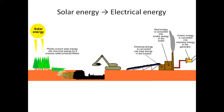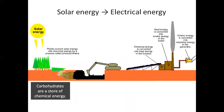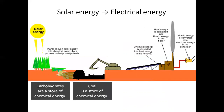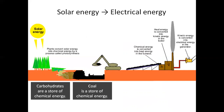How is solar energy converted into electrical energy? Solar energy is captured by plants, which convert solar energy into chemical energy by a process called photosynthesis. Carbohydrates are a store of chemical energy, and coal is also a store of chemical energy. Chemical energy is converted into heat energy in the furnace. Heat energy is converted into kinetic energy in the boiler. Kinetic energy is converted into electrical energy in the generator.